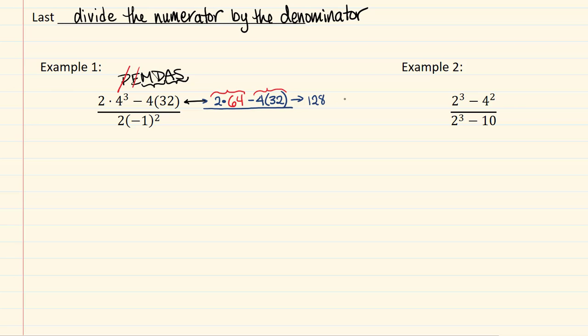And 4 times 32 is, well, we've got 4 times 30, which is 120, and 4 times 2, which is 8, so 128. That's interesting. We've got a 0 in the numerator, but that's okay, we know how to handle that. So, this is going to be 0 in the numerator.